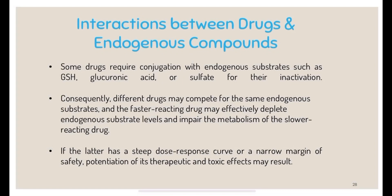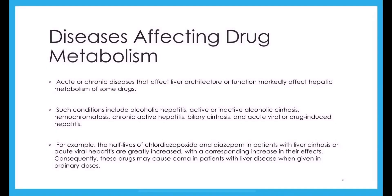If a drug has a steep dose-response curve, potentiation of its therapeutic and toxic effects may be seen. Regarding disease affecting drug metabolism: acute or chronic diseases that affect liver architecture or function markedly affect hepatic metabolism of some drugs. Such conditions include alcoholic hepatitis, active or inactive alcoholic cirrhosis, hemochromatosis, chronic active hepatitis, biliary cirrhosis, and acute viral or drug-induced hepatitis. For example, the half-lives of chlordiazepoxide and diazepam in patients with liver cirrhosis or acute viral hepatitis are greatly increased, with a corresponding increase in their effects; consequently, these drugs may cause coma in patients with liver disease when given in an ordinary dose.